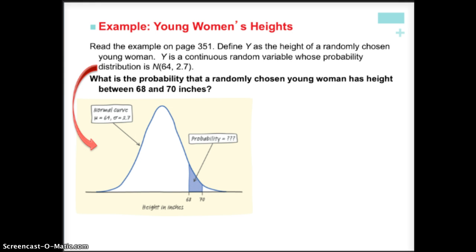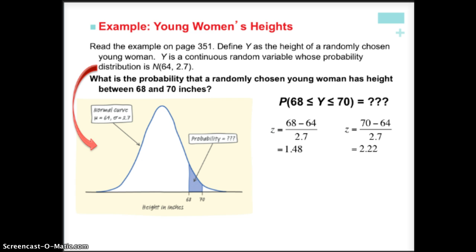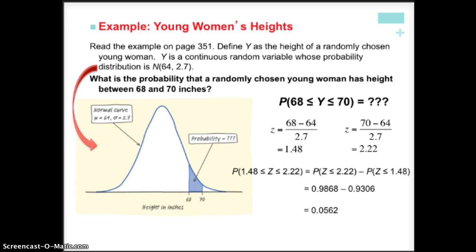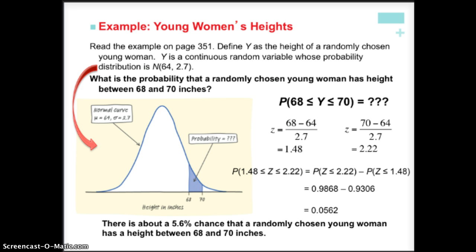This is no different from what we did in Chapter 2. This is a density curve — always draw the curve and shade the area of interest. We set it up using z-scores: write it in probability notation, convert to z-score notation, find the area associated with each value, and take the difference. We also remember the calculator feature that will do this for us, but we still show our work in probability notation, z-score notation, area, and the difference. In the end, there's about a 5.6% chance that a randomly chosen young woman has a height between 68 and 70 inches.